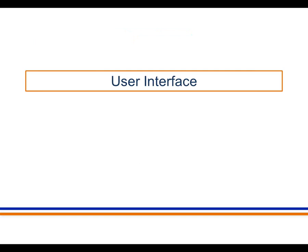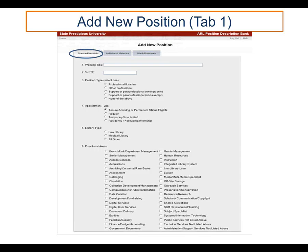Next, I'm going to show you how the user will interface with the system. We'll begin with adding a new position. This is the first tab, which is for providing the standard metadata. As you'll recall, there are six fields — working title through functional area — and through clicking on buttons, radial buttons, and filling text boxes, this information will be provided by the institution. These are required of every position description that's submitted.